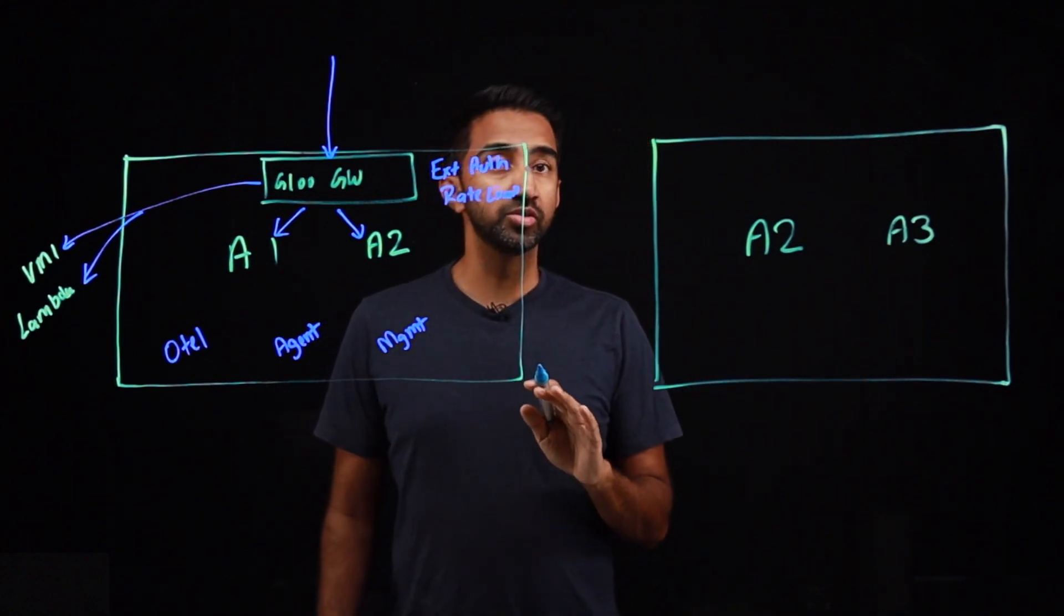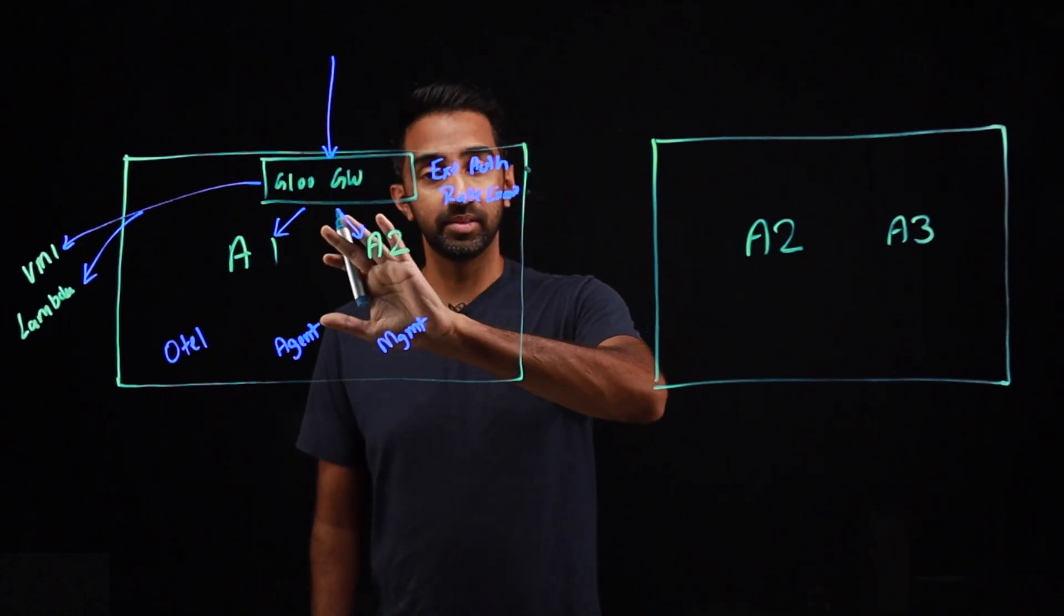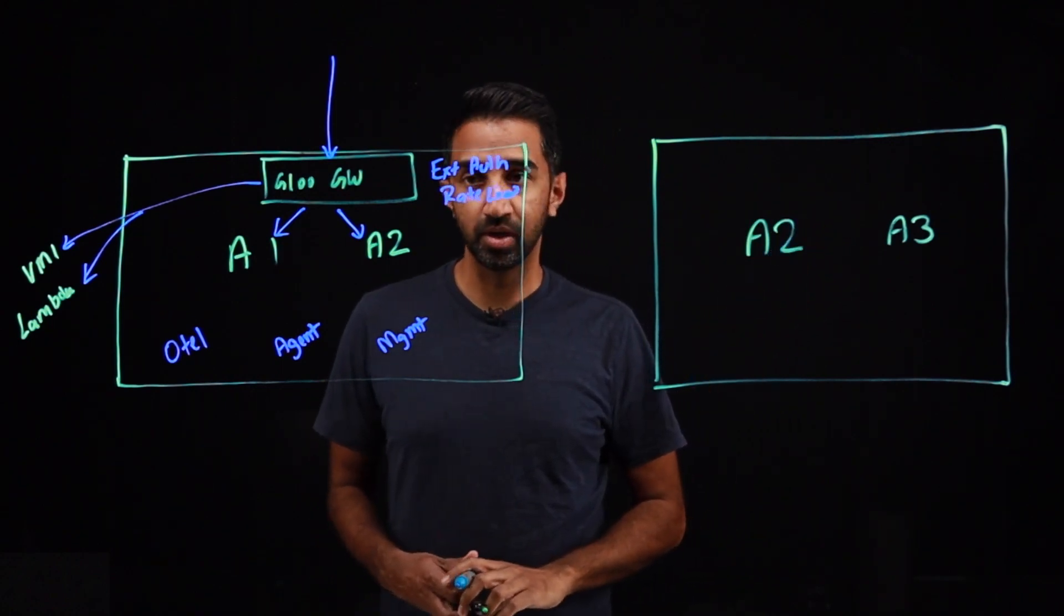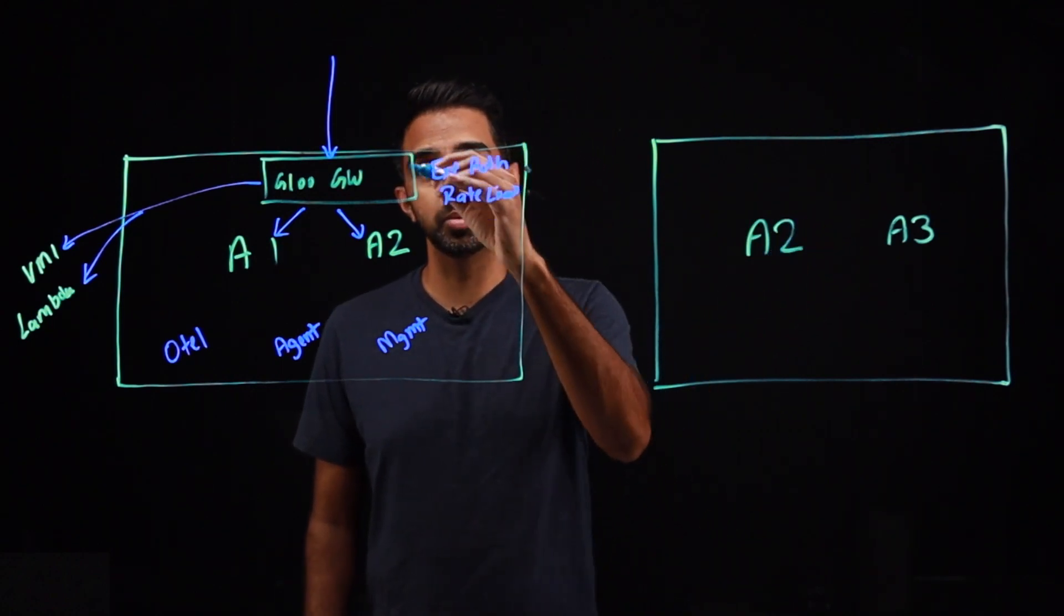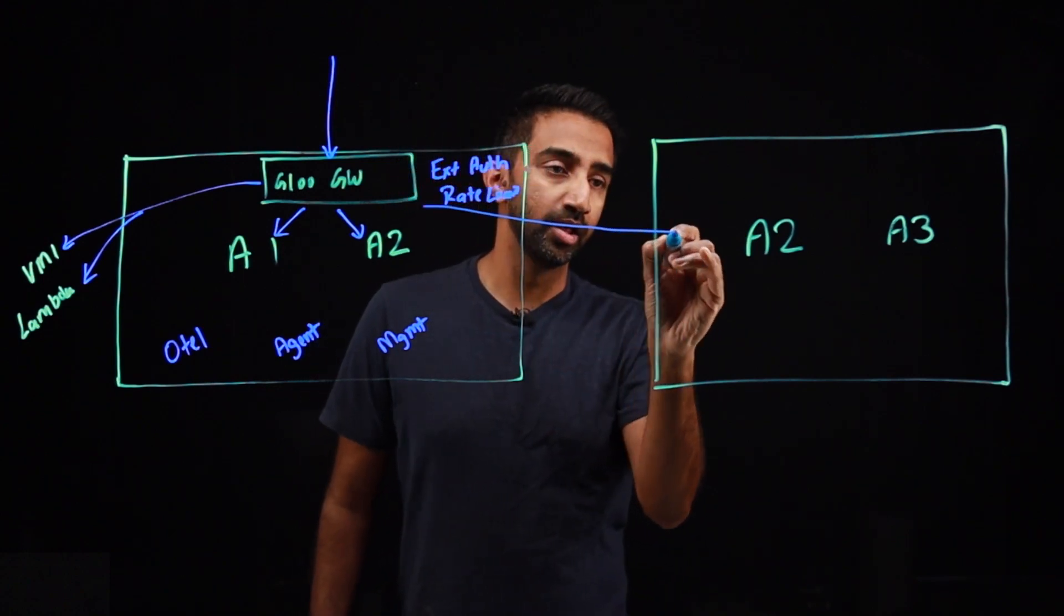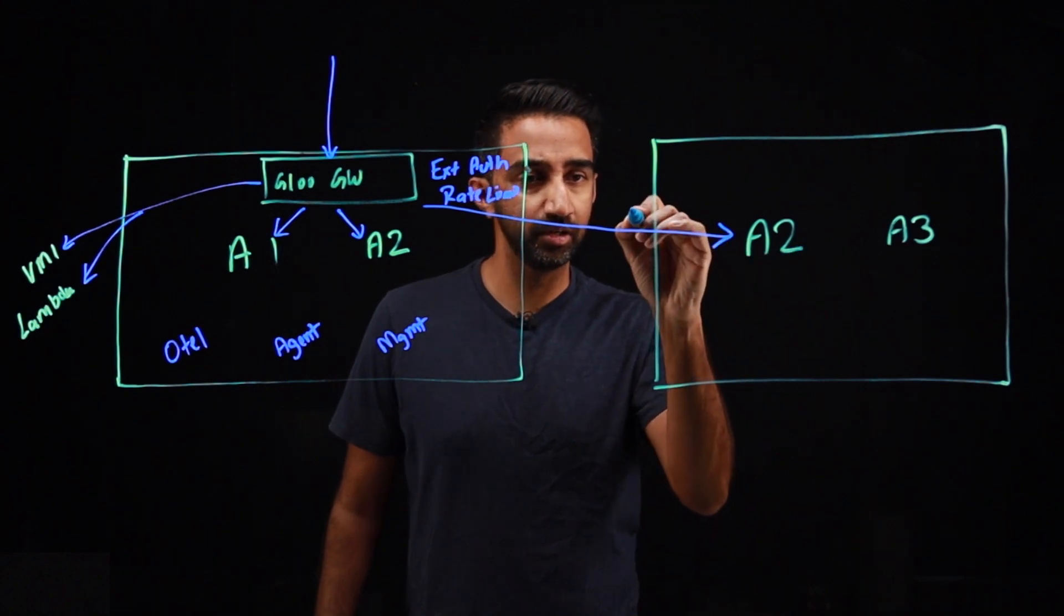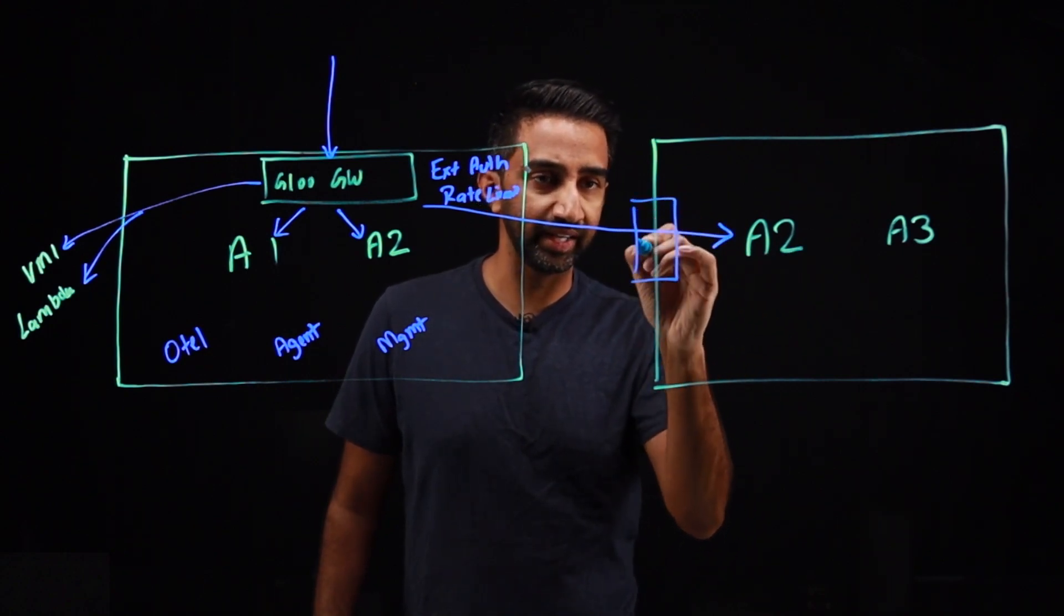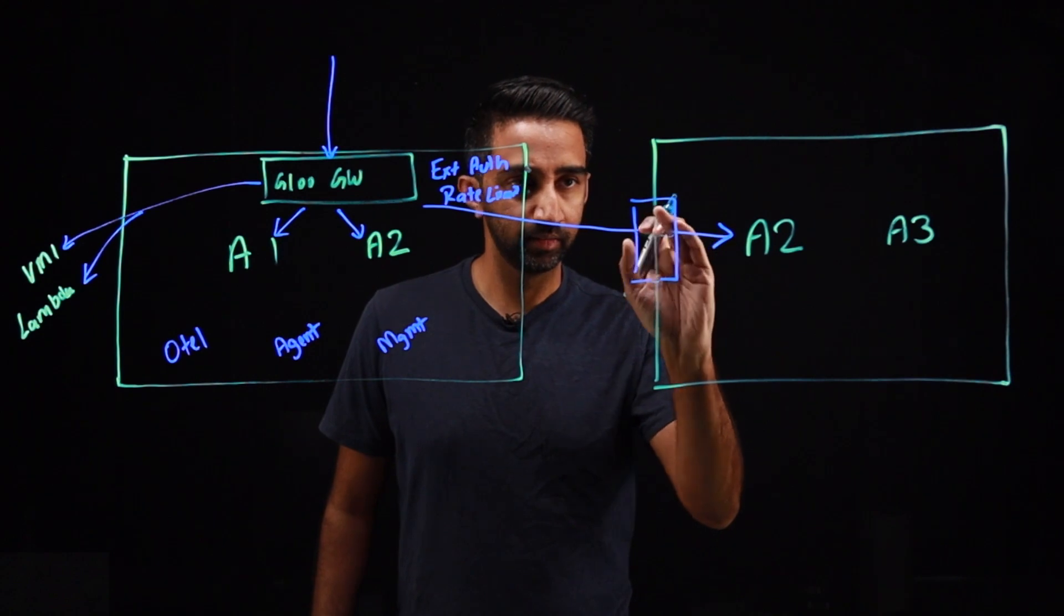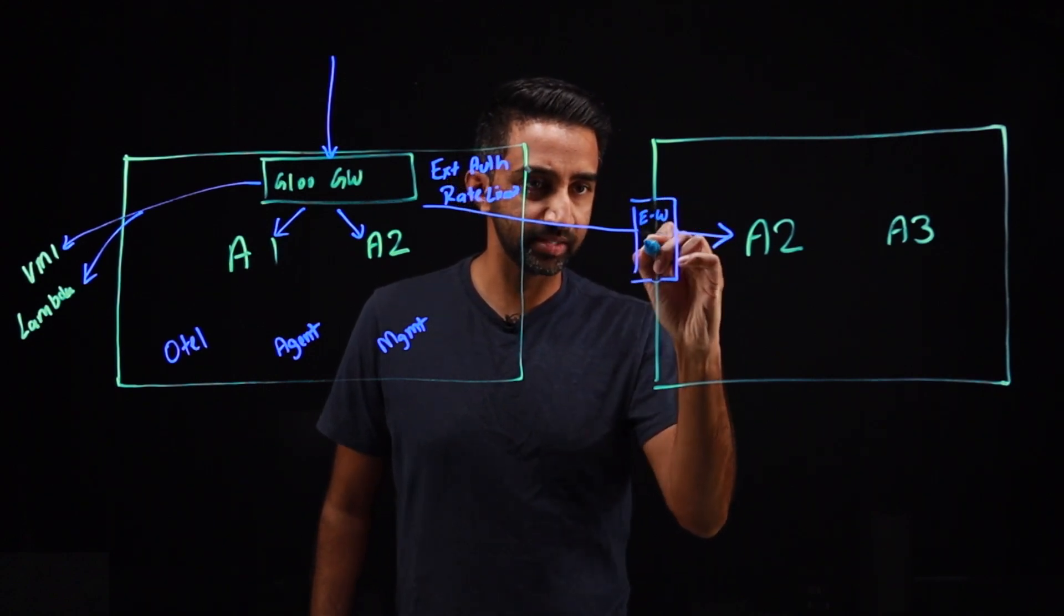Glue Gateway can be used to send traffic to both the local cluster as well as remote clusters. So traffic to remote clusters would flow through Glue Gateway. And then through A2 workloads in a separate cluster through what we call an east-west gateway.